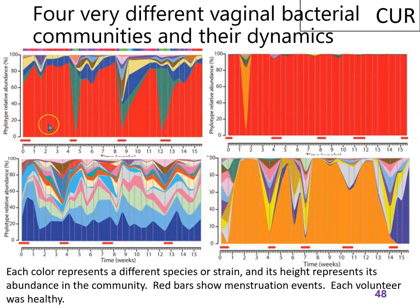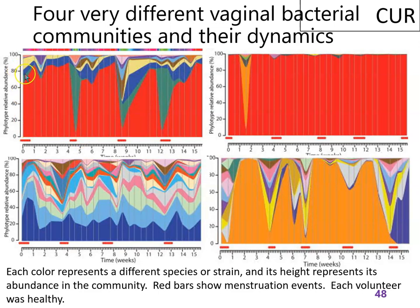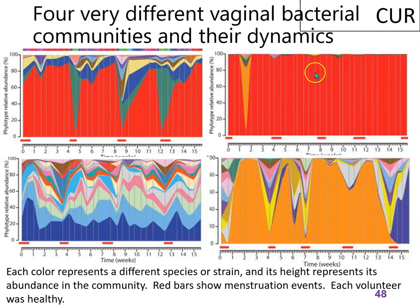What the graphs show is the relative numbers of all the different bacteria at any given time point. They normalize everything to add up to 100%, giving each different species its own color and stacking them. So in the first woman, her microbiota had something like six or seven different bacteria appearing over roughly four menstrual cycles.